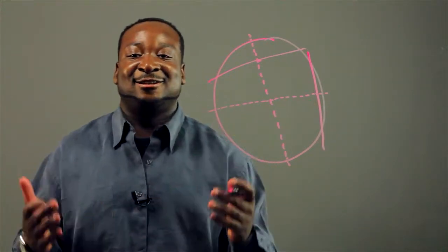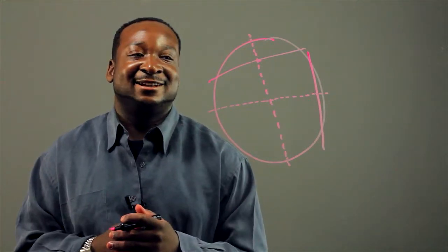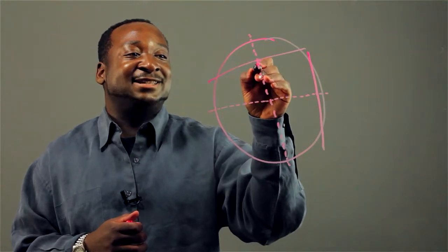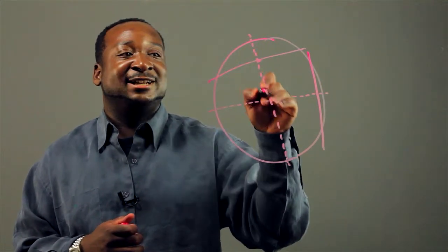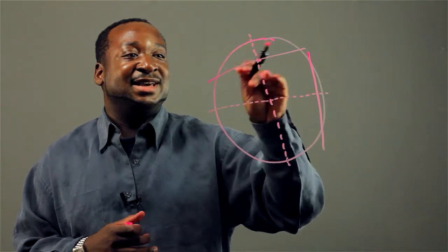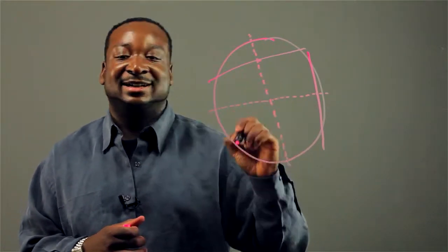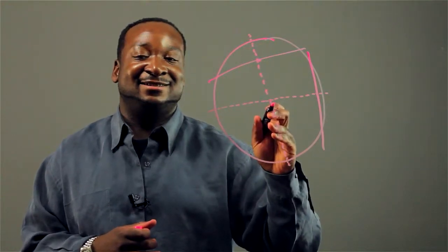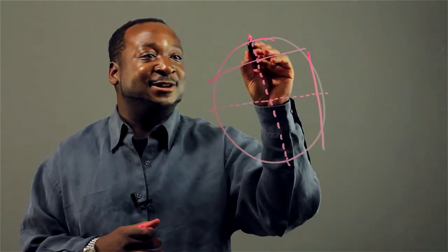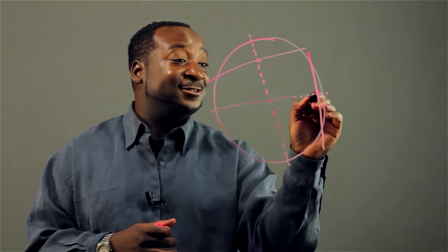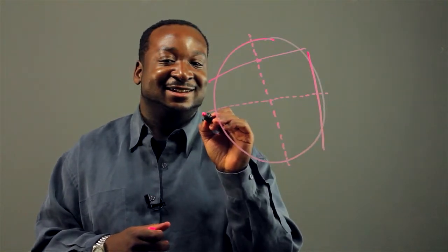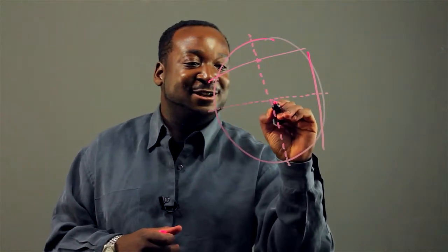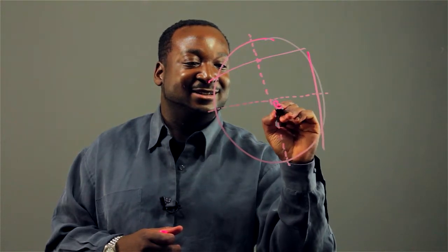Now, there's a theorem in geometry that says that if you pass a perpendicular through the midpoint of a line in the circle, that the center must be on that line. So since we know that the center is on this line, and the center is also on this line, where they intersect must be the center.